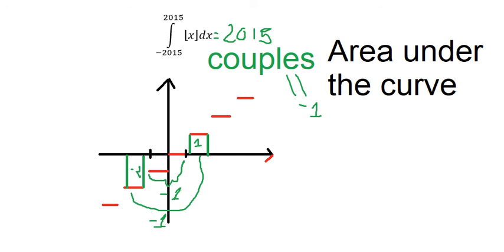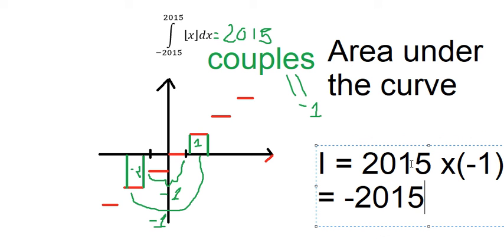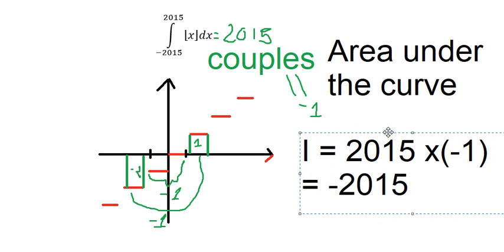The final answer should be I equals 2015 couples multiplied by negative one, which gives us negative 2015. This is the technique to calculate this integral.